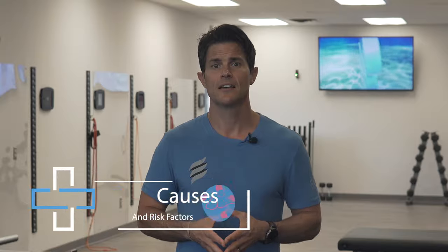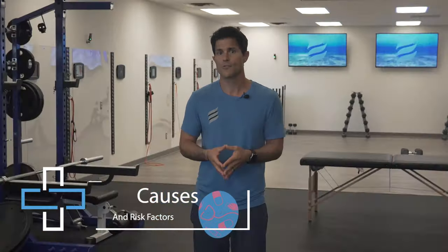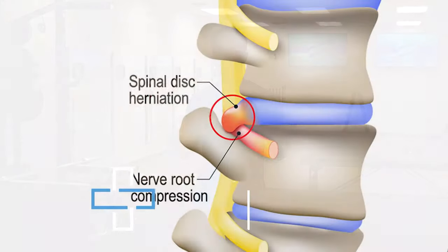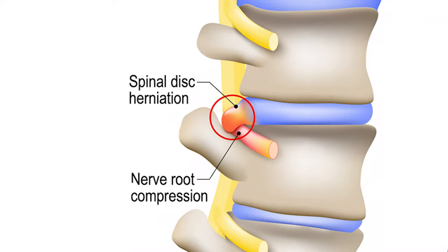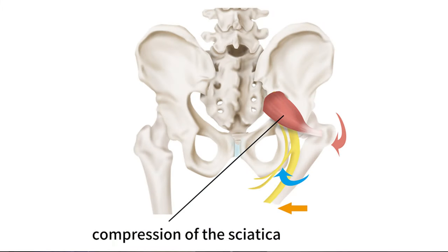The main cause of sciatica is a herniated disc in the lumbar region of the spine. Other causes include spinal stenosis, or a narrowing of the canal where the nerve root travels. Another common cause is compression of the sciatic nerve by the piriformis muscle, otherwise known as piriformis syndrome.